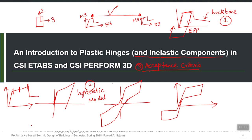We tell the plastic hinge that this is the plastic rotation capacity corresponding to IO, this is LS, and this is CP. These three numbers are also an input, beside the action-deformation curve and hysteretic behavior, so that the program knows that if a particular strain level or rotation level is exceeded, it will declare that the element has crossed the IO level, and similarly for LS and CP.